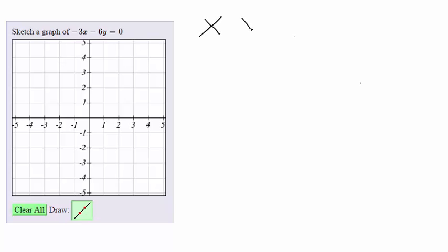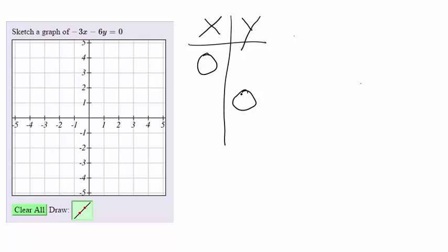This video will show you how to graph linear equations using MyOpenMath. To graph this linear equation, we will need at least two points. So let's let x be 0, and then we'll let y be 0. These will be our x and y intercepts.